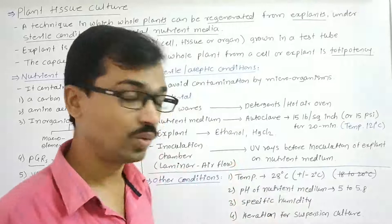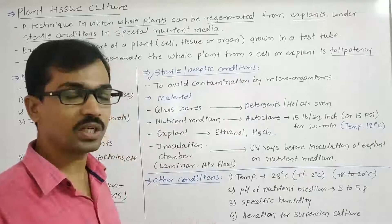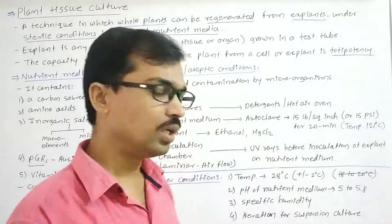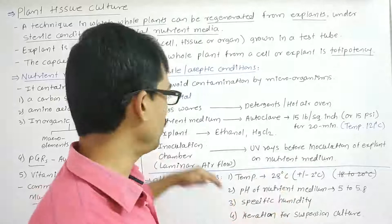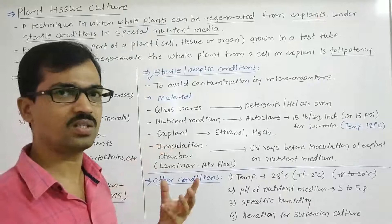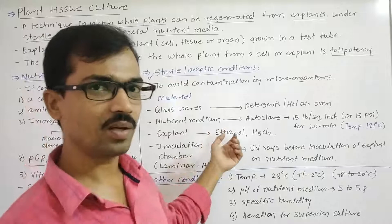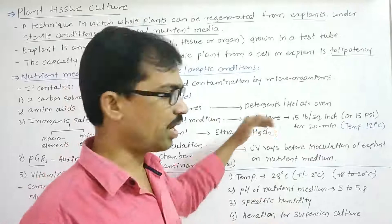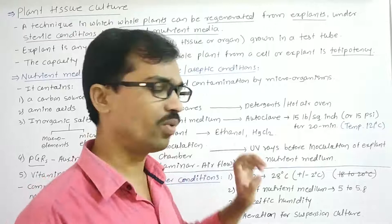After sterilizing the nutrient medium, the explant must also be sterilized. Any bacteria or fungi on plant tissue could rapidly grow once placed on the nutrient medium. To sterilize the explant, it is treated with ethanol, mercury chloride, or sodium hypochlorite — generally a combination of two of these chemicals is used to sterilize the plant surface.